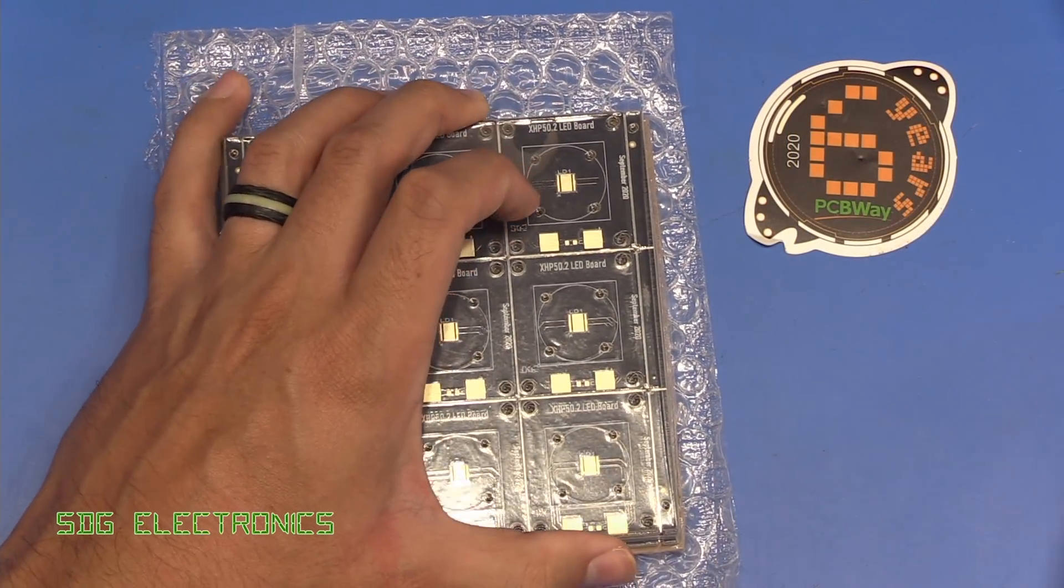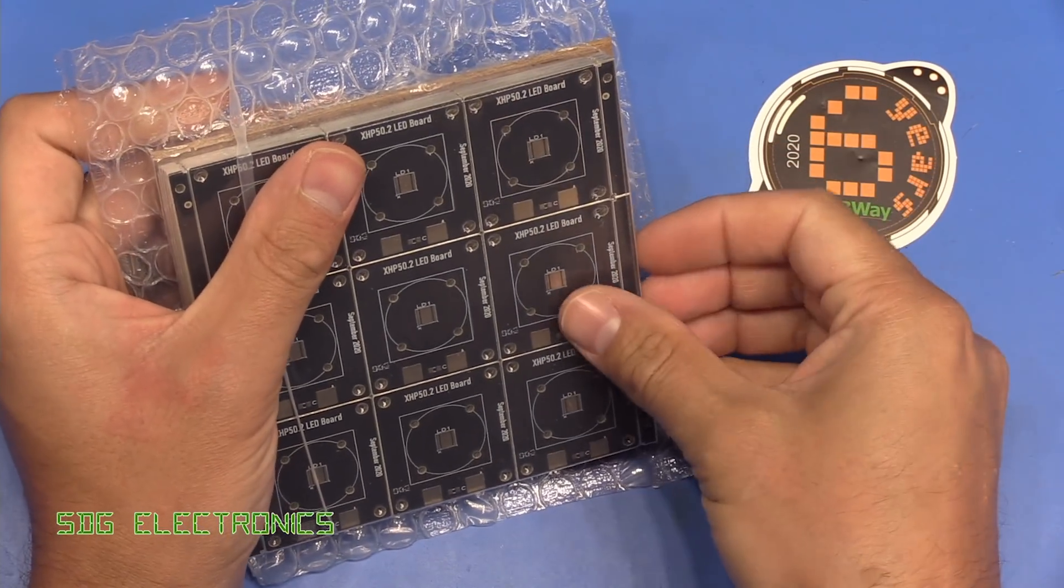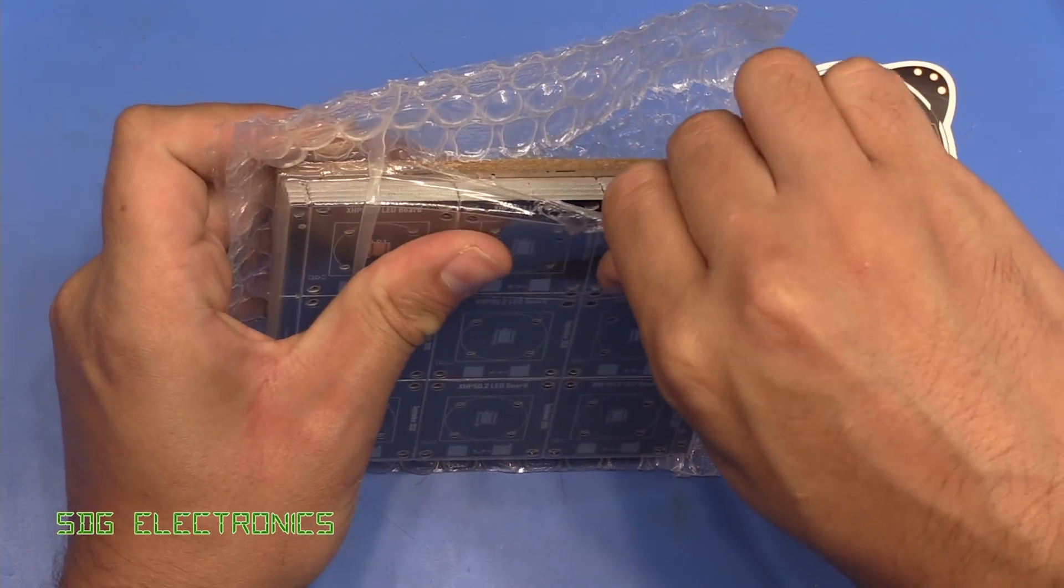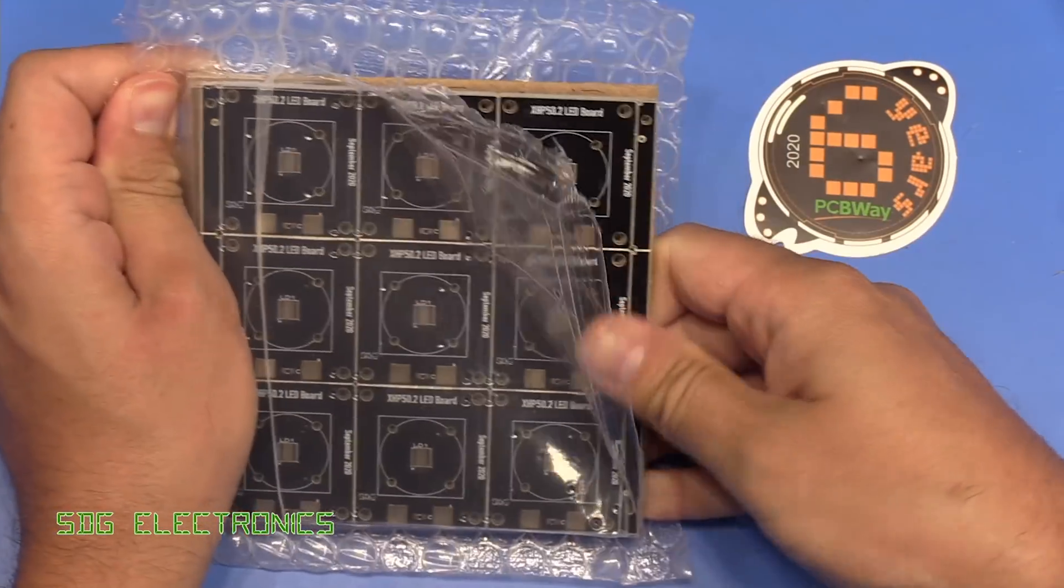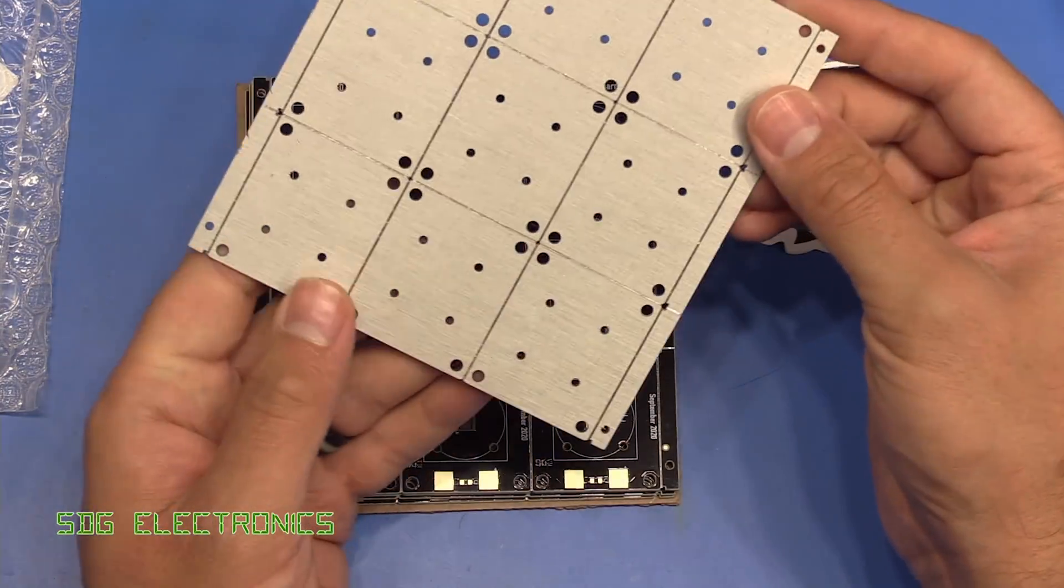So many of you requested these, and what we've got here are some metal clad PCBs. These are aluminium PCBs that may end up giving us better thermal performance on our Cree LEDs.